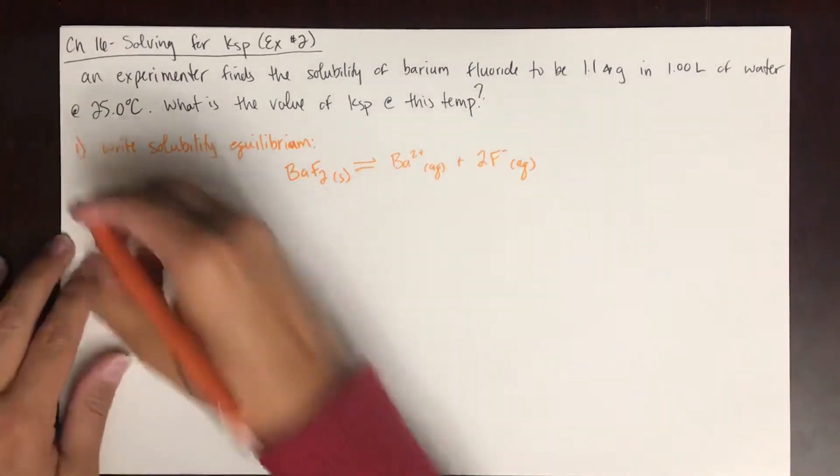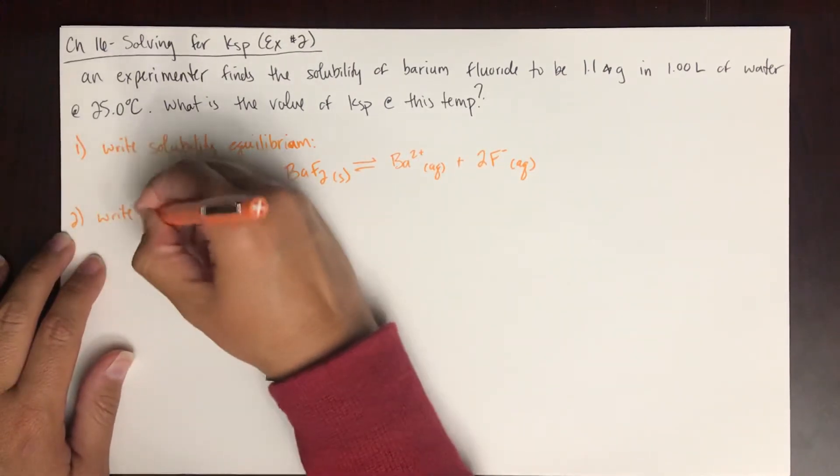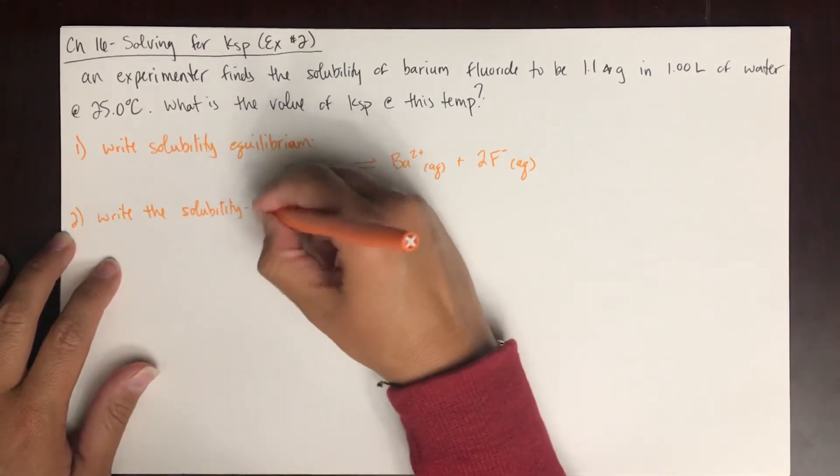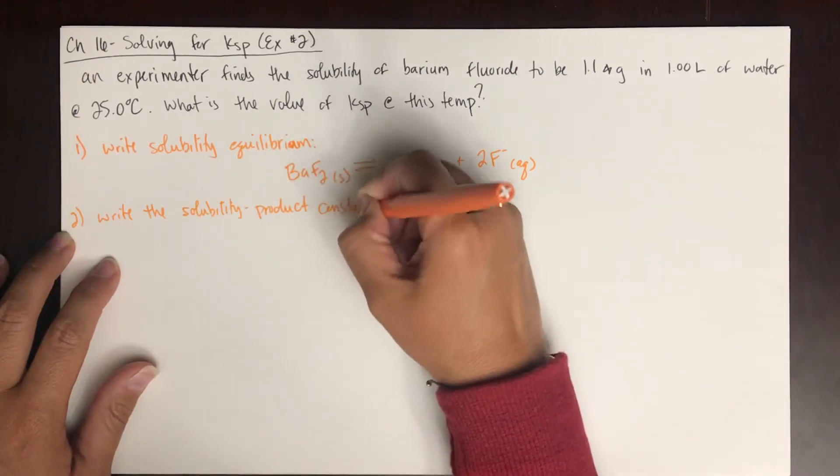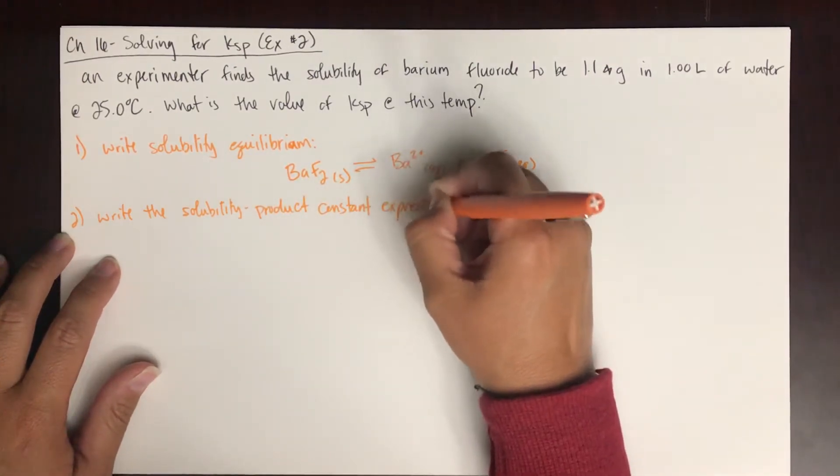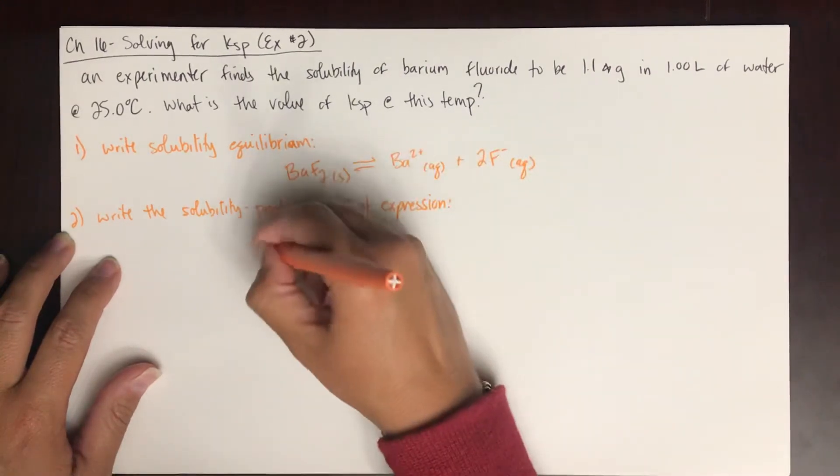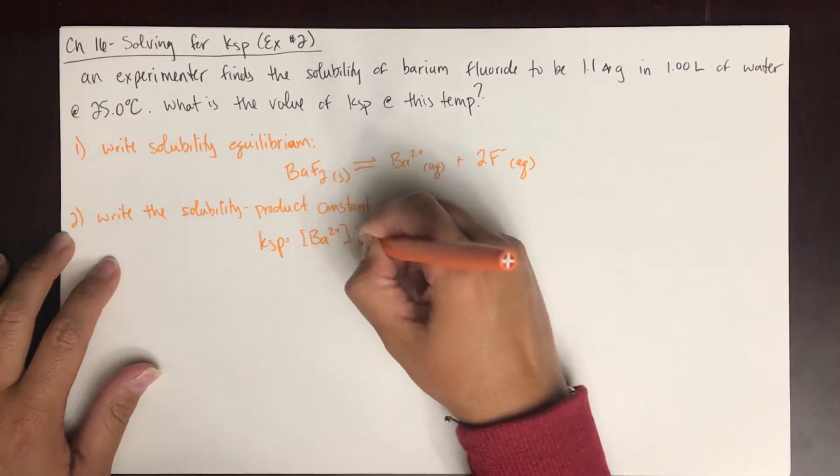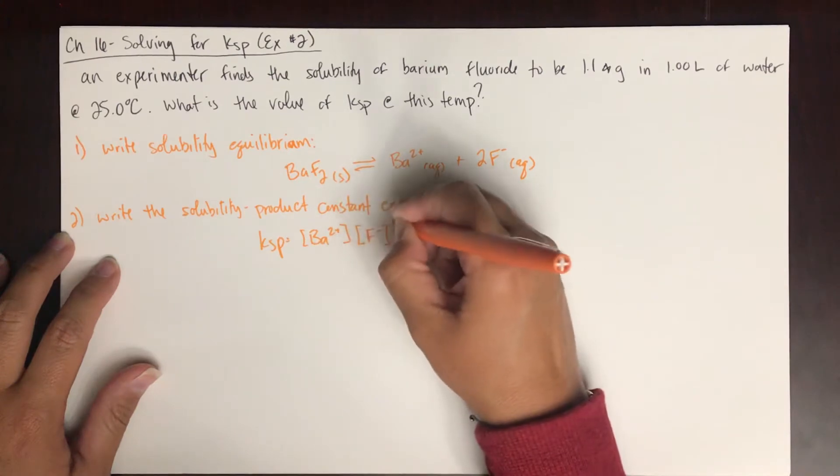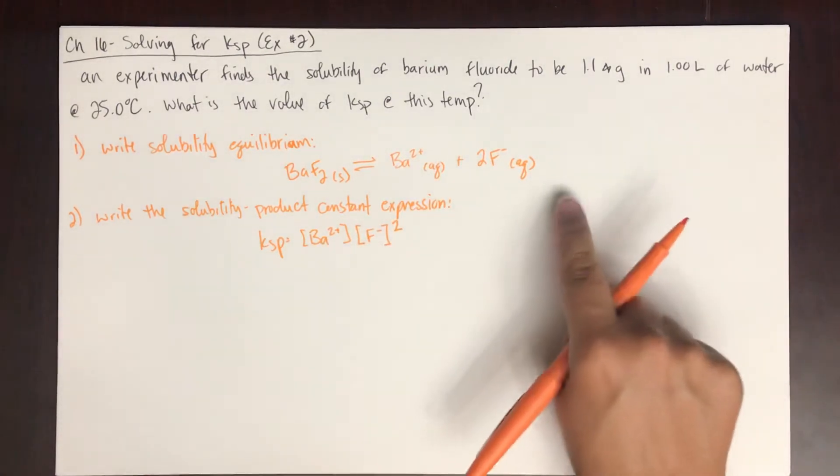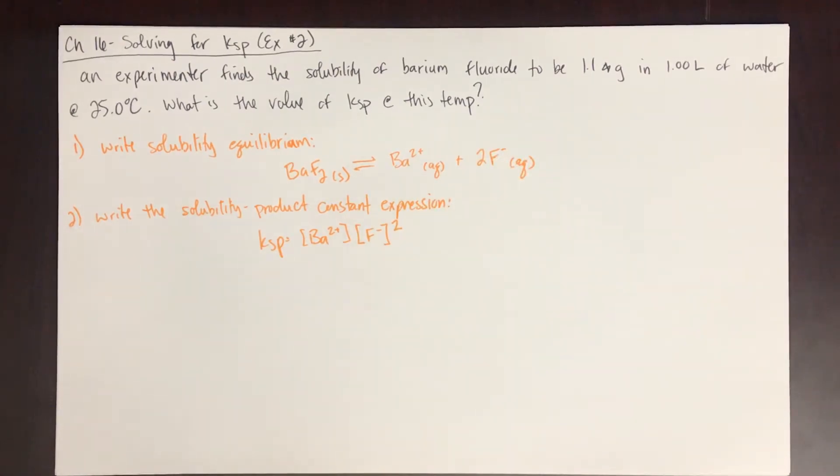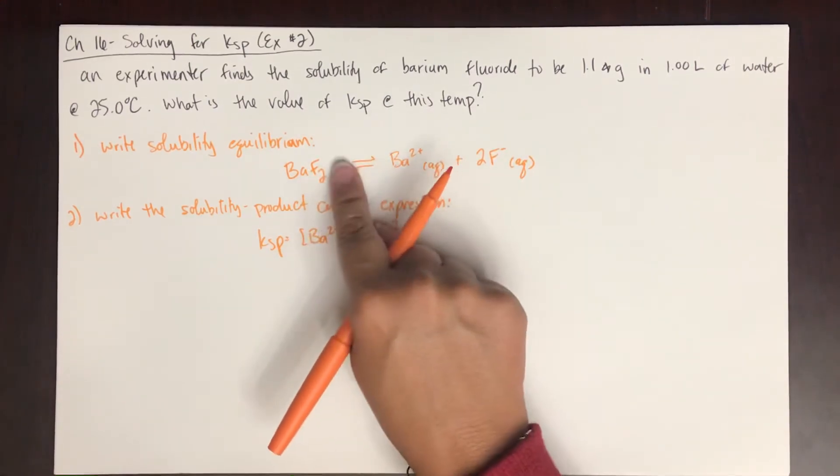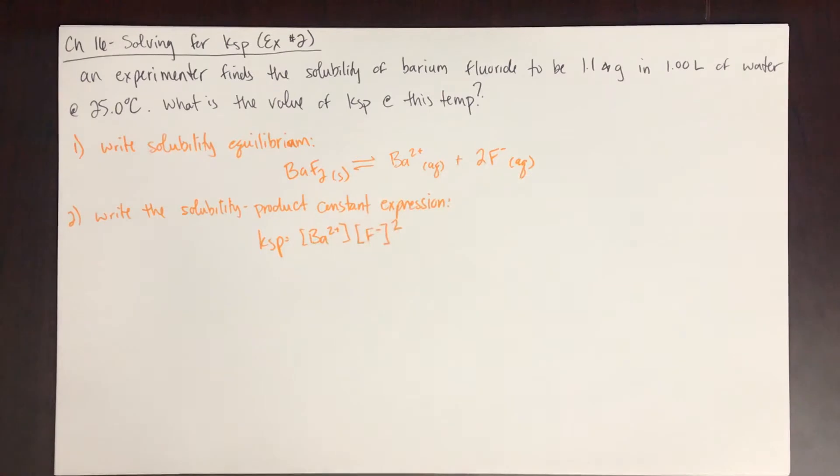So if we write the solubility product constant expression, it's going to be KSP equals barium 2 plus times fluoride squared. Because remember, coefficients become exponents when you write the KSP. It's the concentration of the products over the concentration of the reactants. Solids are excluded. Coefficients become exponents.